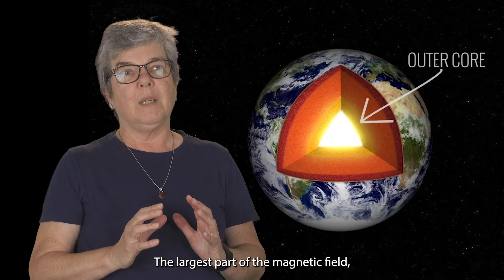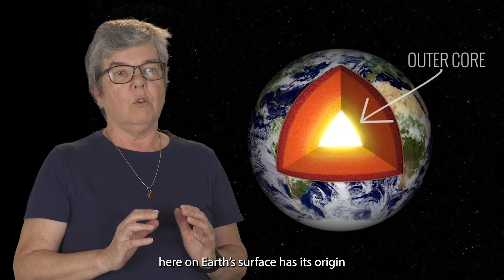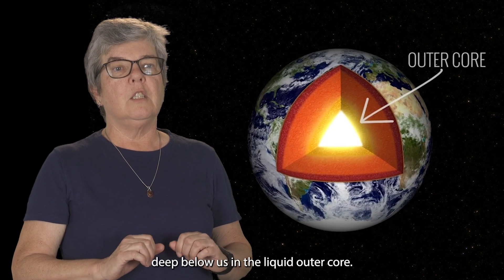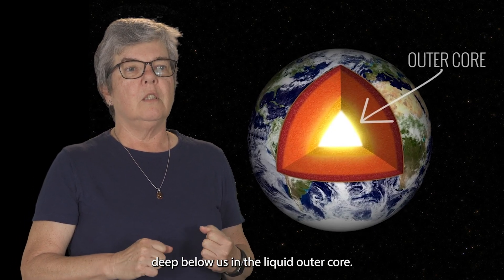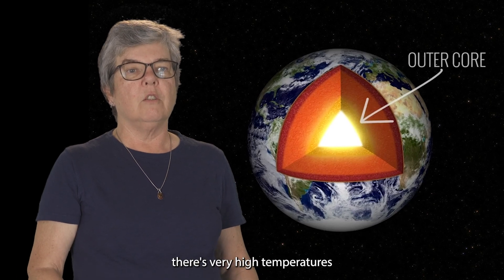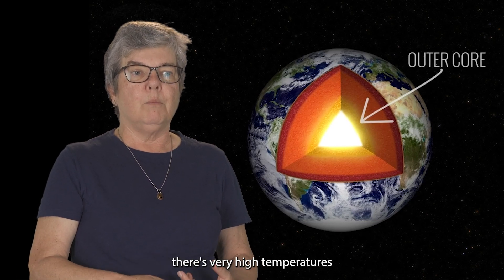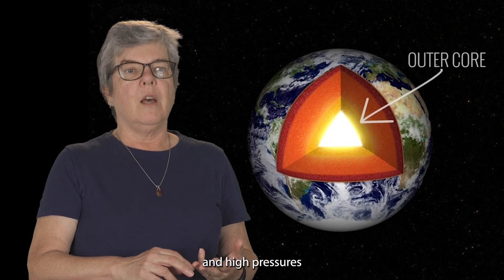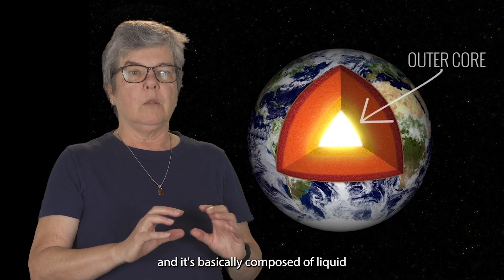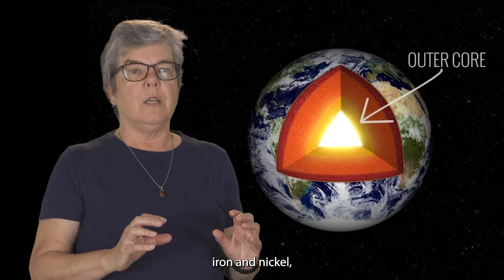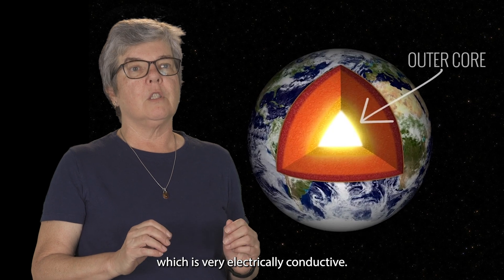The largest part of the magnetic field here on Earth's surface has its origin deep below us in the liquid outer core. So in the liquid outer core, there's very high temperatures and high pressures. And it's basically composed of liquid iron and nickel, which is very electrically conducting.